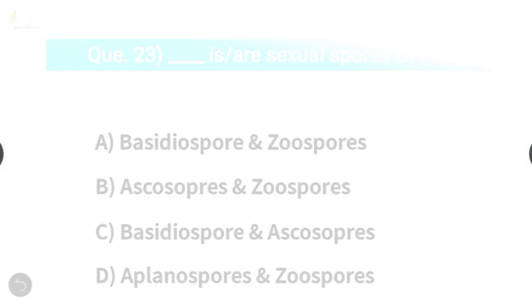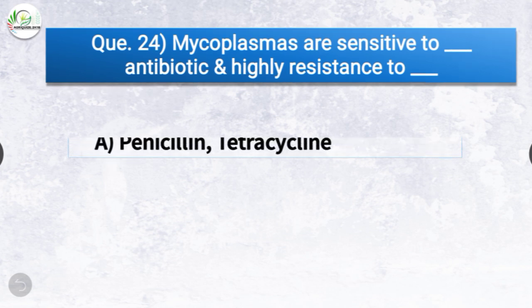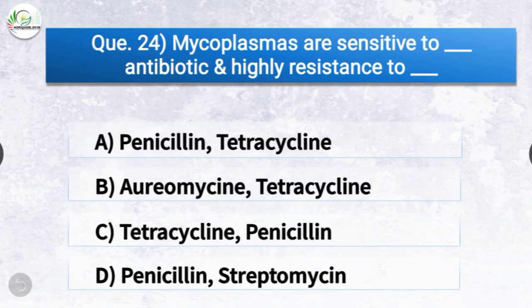Question number twenty-four: Mycoplasmas are sensitive to dash antibiotic and highly resistant to dash. The options are penicillin/tetracycline, oreomycin/tetracycline, tetracycline/penicillin, or penicillin/streptomycin. The correct answer is option C, tetracycline and penicillin. Mycoplasmas are sensitive to tetracycline antibiotic and highly resistant to penicillin.